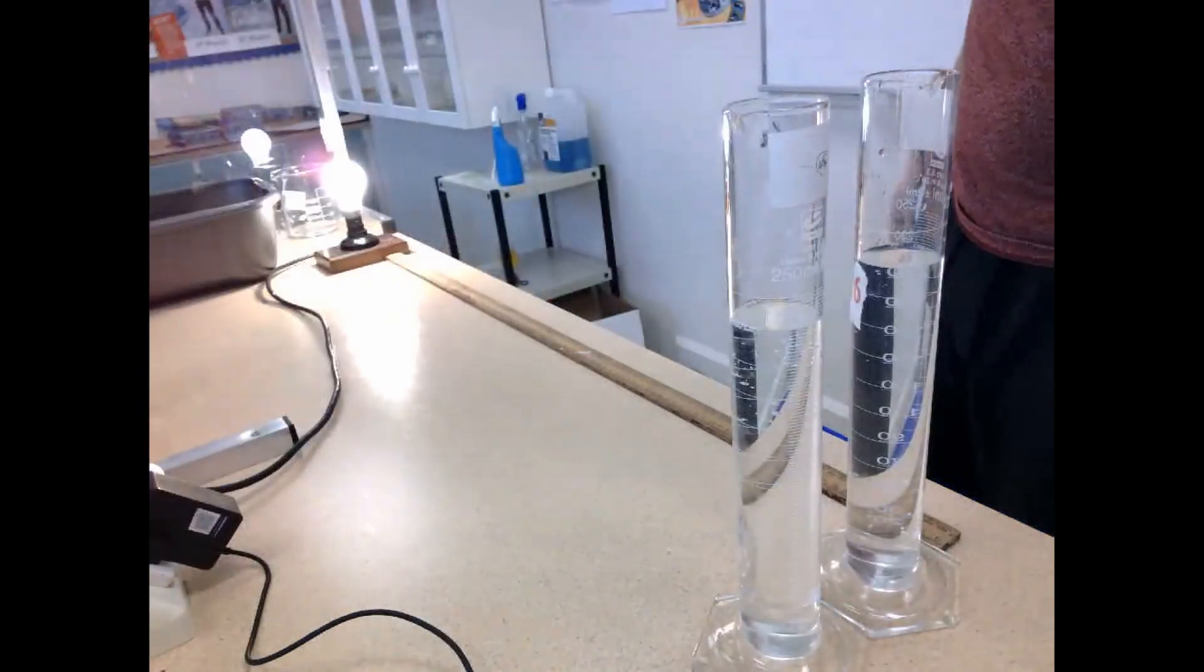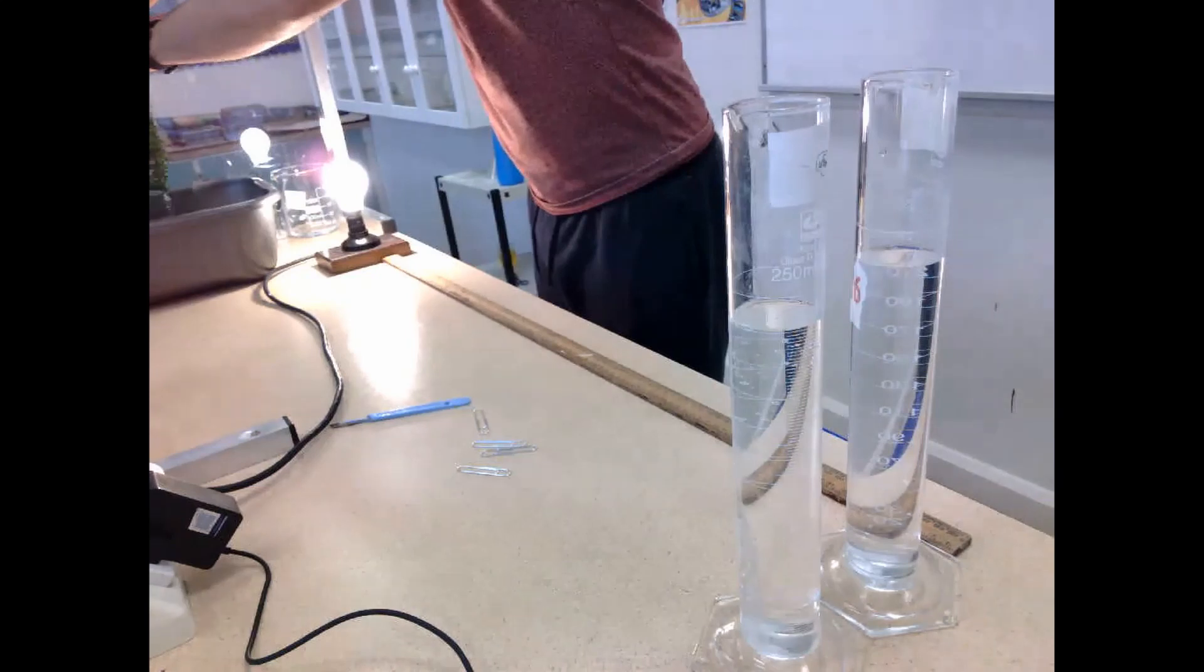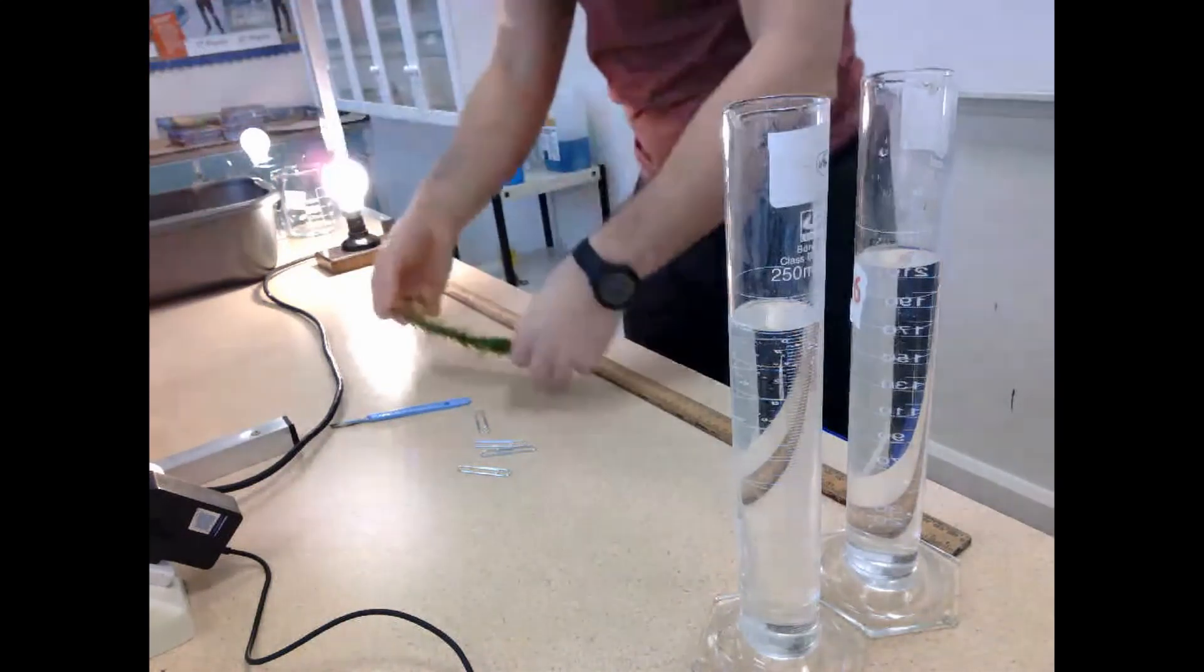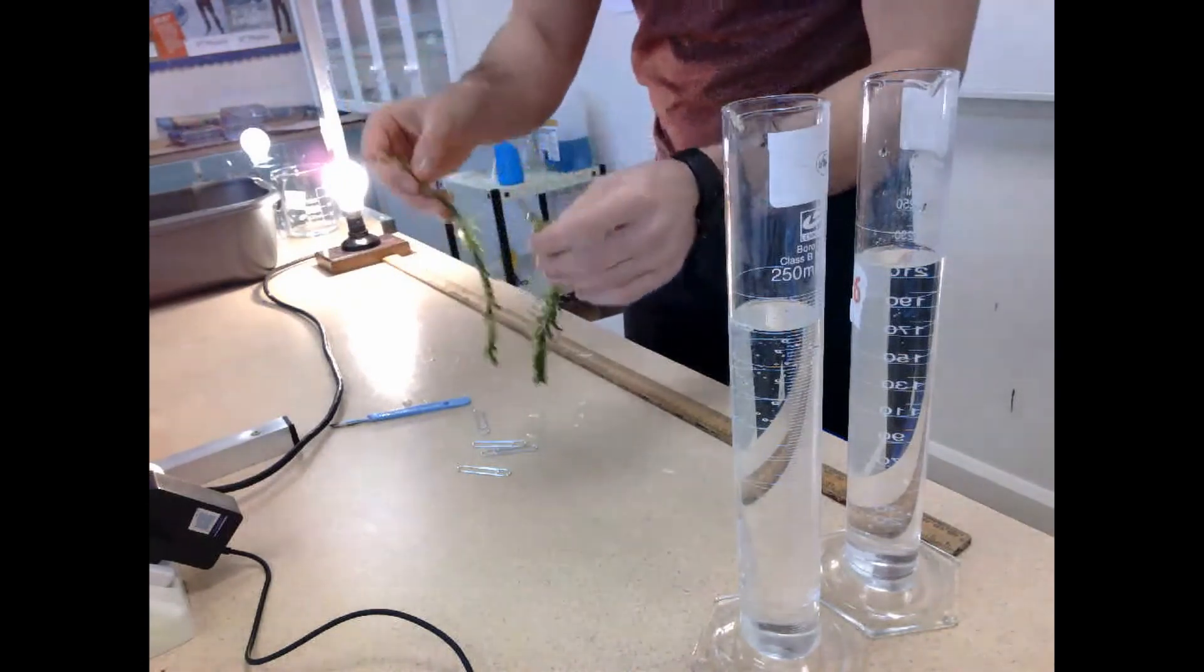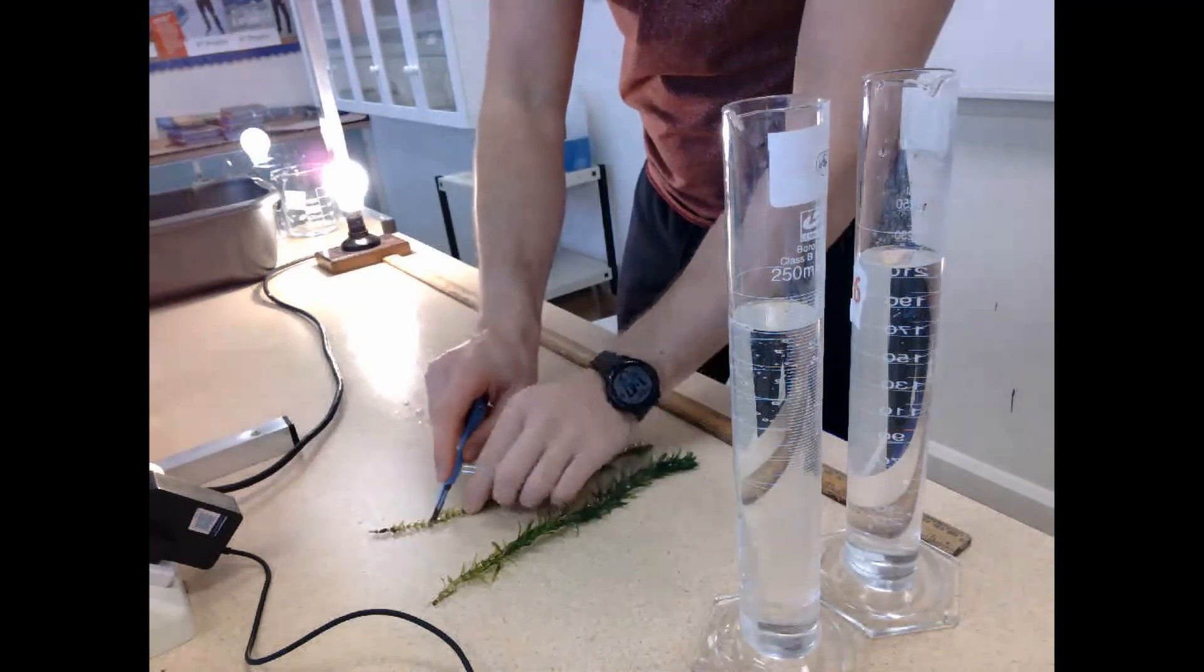So I'm going to take two bunches of elodea and then using my scalpel, I'm going to cut across them at an angle. Now the reason I cut across at an angle here is to cut through an air sac, so that when these elodea are in the graduated cylinder and they begin to photosynthesize, we can see the bubbles being produced.